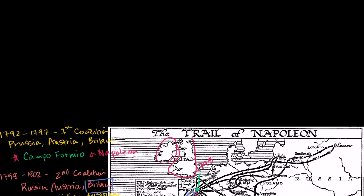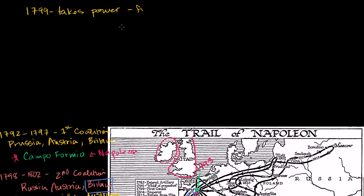Let's review what Napoleon was up to going into the War of the Third Coalition, which really establishes Napoleon as the dominant figure in Europe. In 1799, he takes power — first with two other consuls, but then he declares himself First Consul.